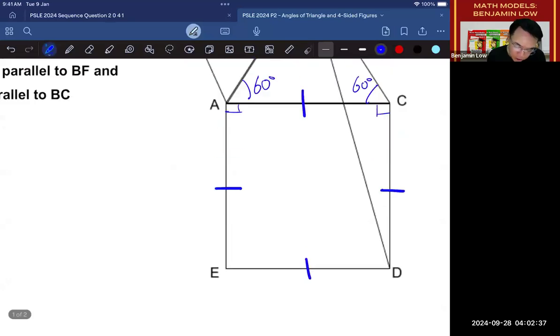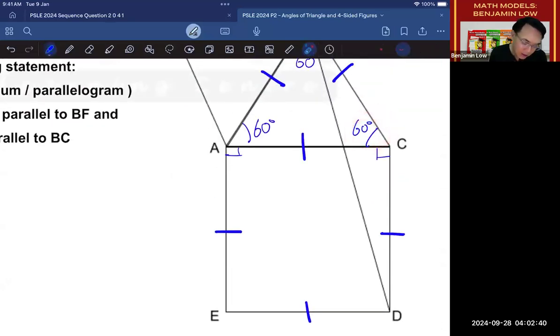So one of the most important things is to actually write in the values as quickly as you can. So for an Equilateral Triangle, of course, the angles are all 60 and for a Square, all the corners are 90.